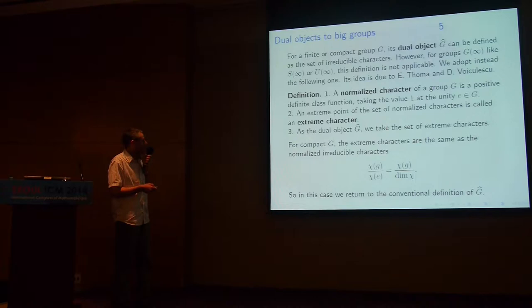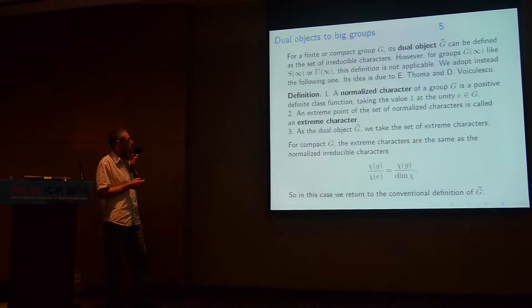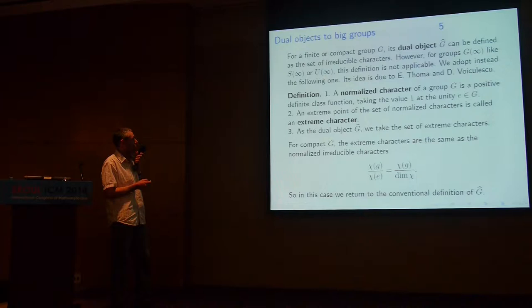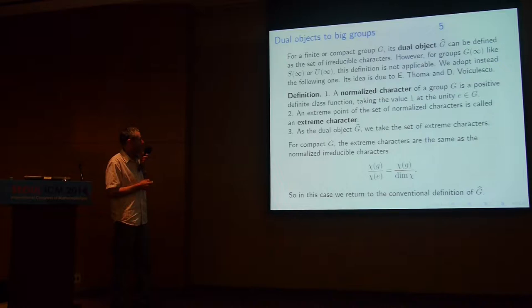Now I have to define what dual objects are. In the case of a finite or compact group, the dual object G-hat is defined as the set of irreducible characters — this is the familiar definition. However, for inductive limit groups like S-infinity or U-infinity, this definition is not applicable. We adopt instead an alternative definition, an idea developed by Vershik and Kerov.